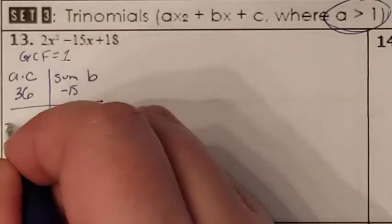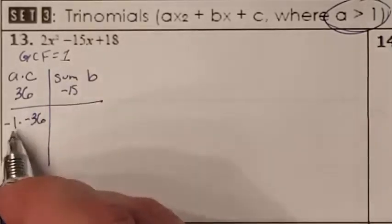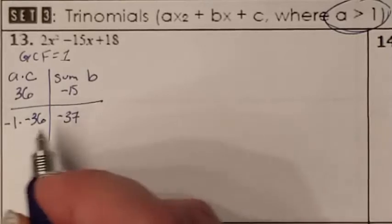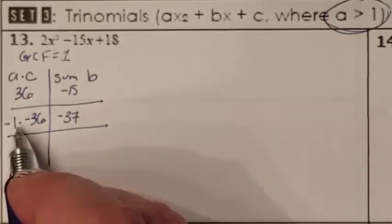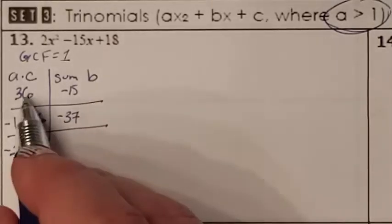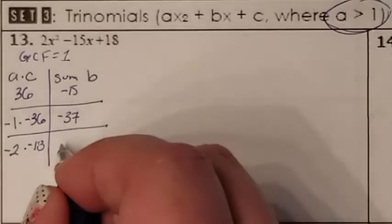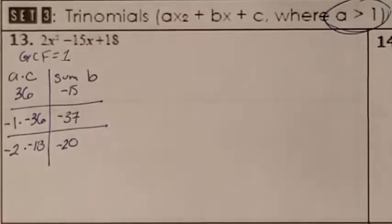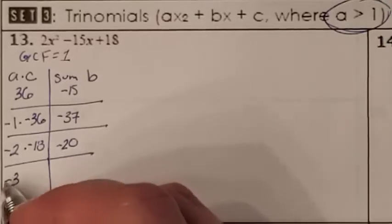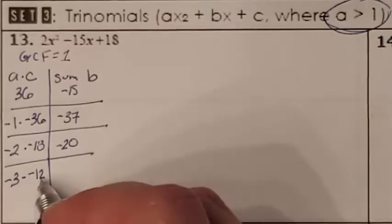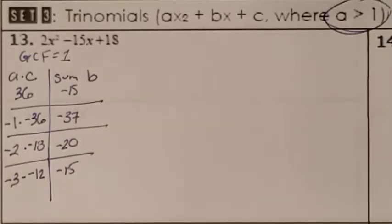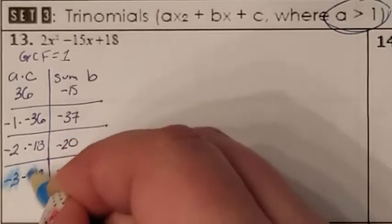Not quite sure. I know negative 1 times negative 36 will multiply to give me 36, but when I add these, I get negative 37 — not the negative 15 I needed, so that doesn't work. Negative 2 times negative 18 multiplies to give me 36, but when I add these, I get negative 20 — not negative 15. Negative 3 times negative 12 multiplies to give me 36, and they add together to give me negative 15. So the two numbers I needed were negative 3 and negative 12.